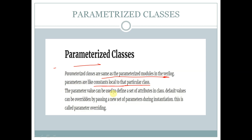The parameter values can be used to define a set of attributes in the class. Default values can be overridden by passing a new set of parameters during instantiation. This is called parameter overriding.